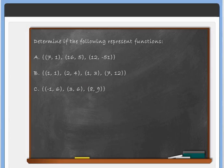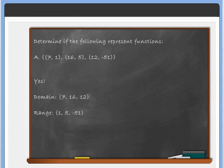We can also list matchings as ordered pairs. For example a: (7, 1), (16, 5), (12, -51). The x values are the domain and the y values are the range. Is this a function? Yes — since each x only appears once and is matched with only one number, it is a function.